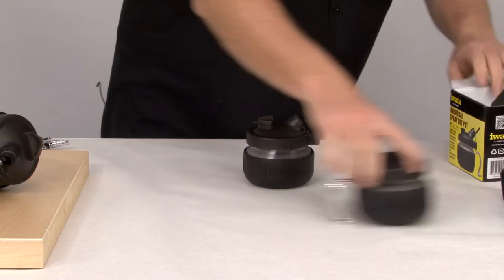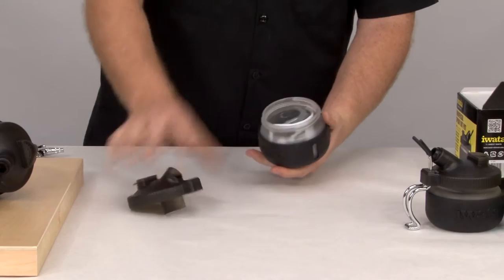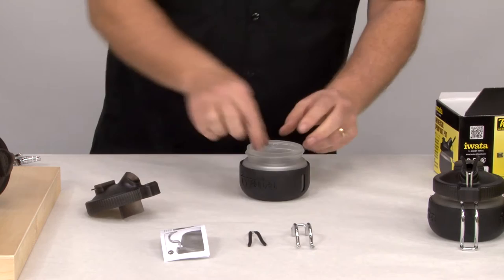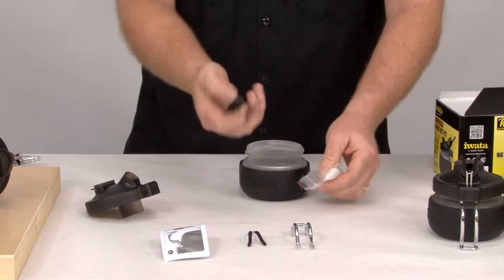all your goodies are inside the spray-out pot. You've got your instructions, the universal airbrush guide, the spray-out pot holder, and the filters and nozzle holder.